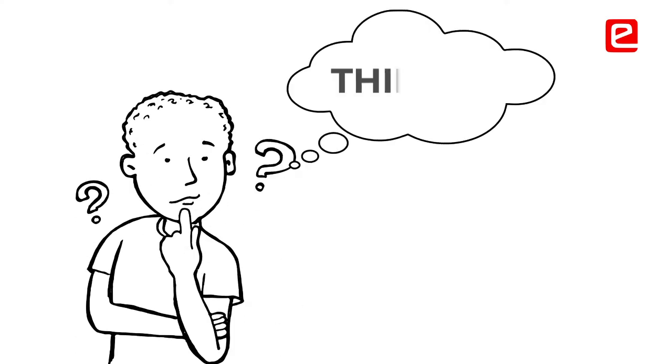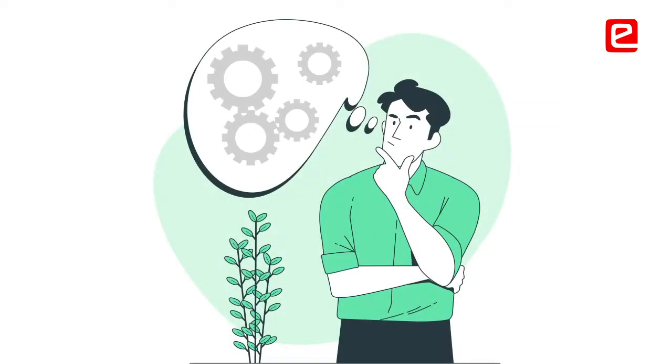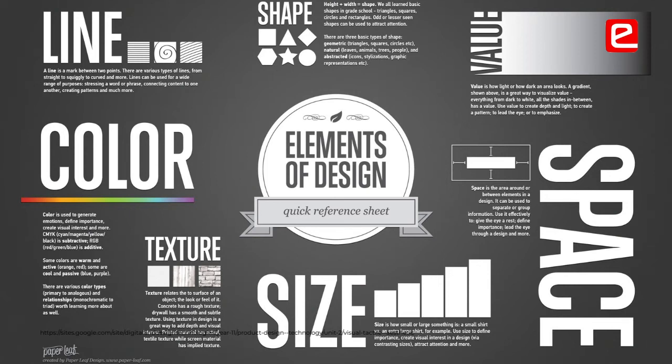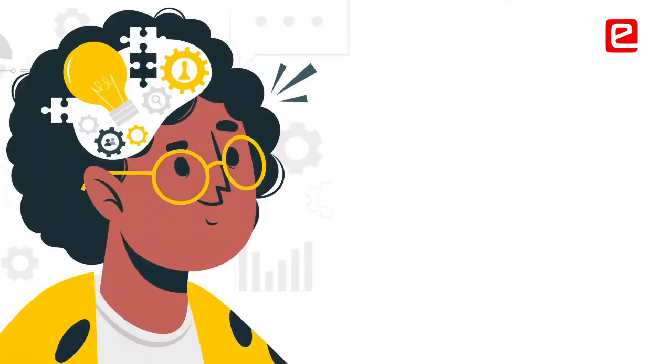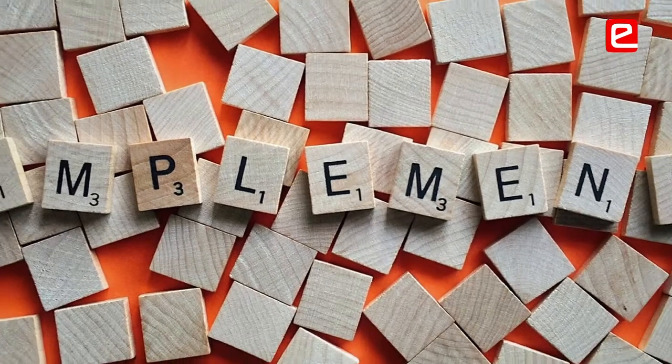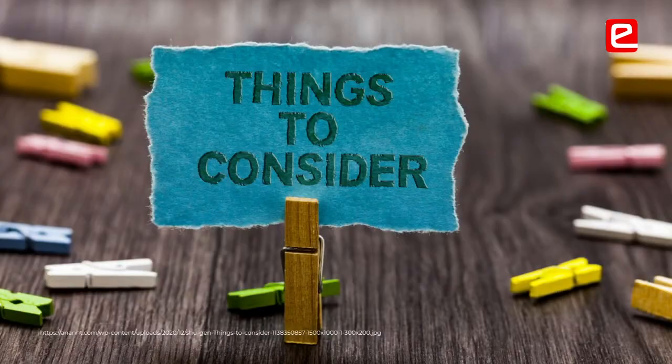There should always be a thought process behind design — why we are implementing it. There should be a reason behind every design. I feel there are a few parameters: the design should be aesthetic, the measurements, the material we are using, whether it's just imagination or something we can actually implement, and whether it should be stable and durable. These are all parameters we need to consider.